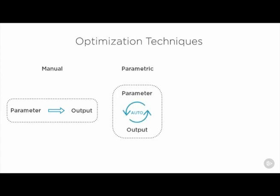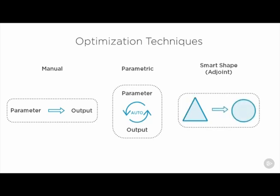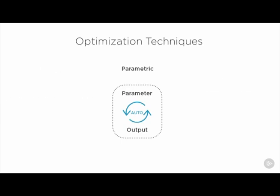The third type of optimization is called smart shape, which uses an adjoint solver and basically runs a topology optimization. To give an example, let's say you have a triangle and you want to optimize the length of one side — it won't change the length of the triangle, but will actually change the shape of the triangle. This is called smart shape optimization. But for today, we're going to address the second one, which is parametric optimization.